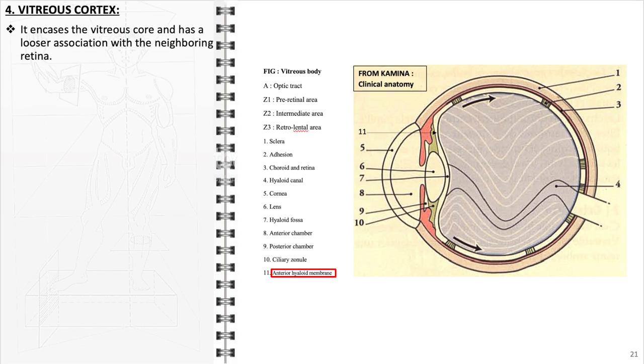The vitreous cortex, a denser layer of vitreous gel, encases the core and is more closely associated with the retina. It is firmly attached at specific points, like the vitreous base, around the optic nerve, and over the retina.